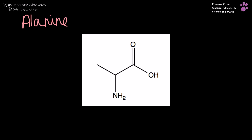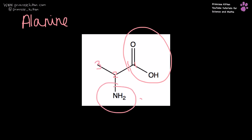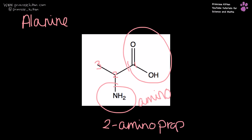Here we have alanine. Here we have our dominant carboxylic acid group. This is carbon number one, this is carbon number two, this is carbon number three. We have an amino group over here. So this is 2-aminopropanoic acid.